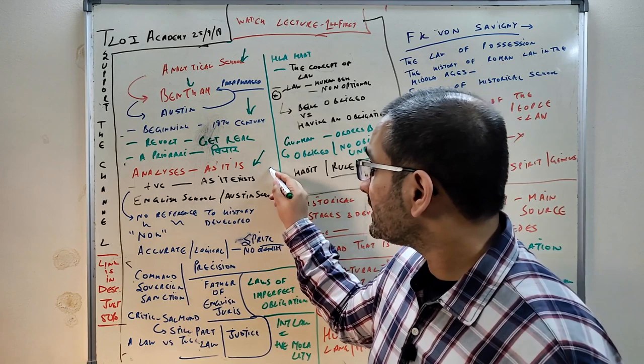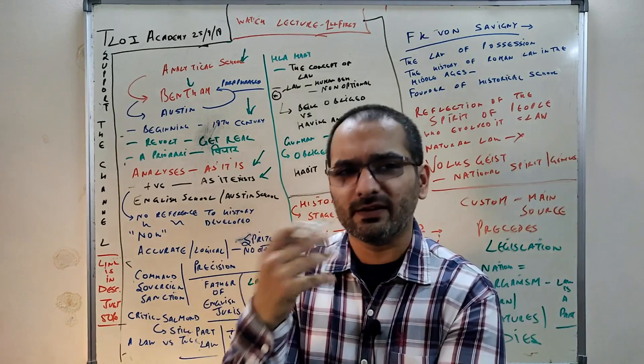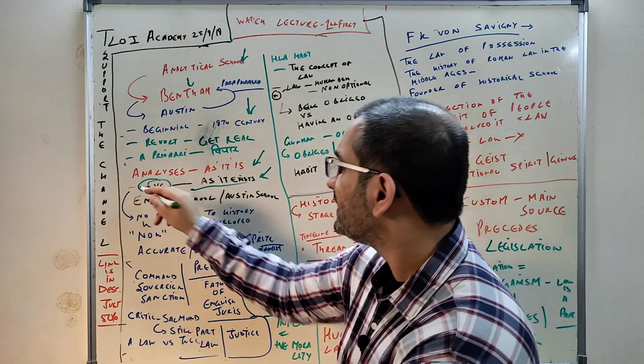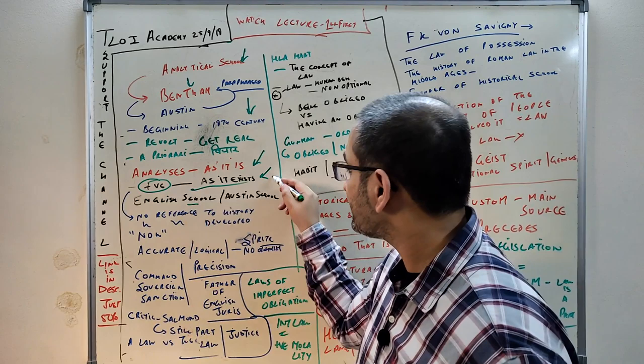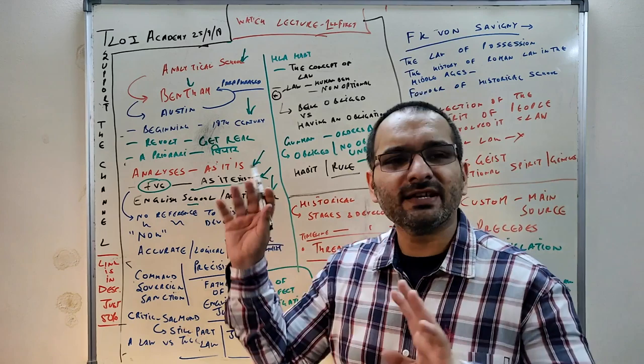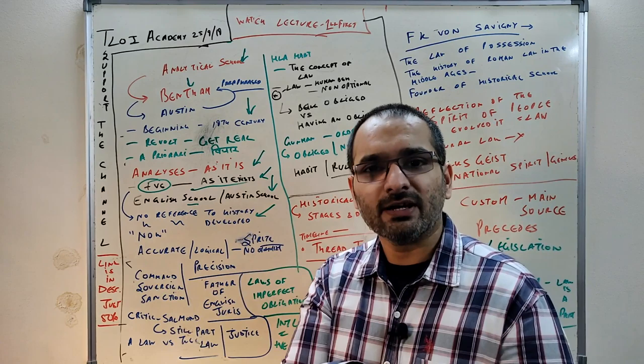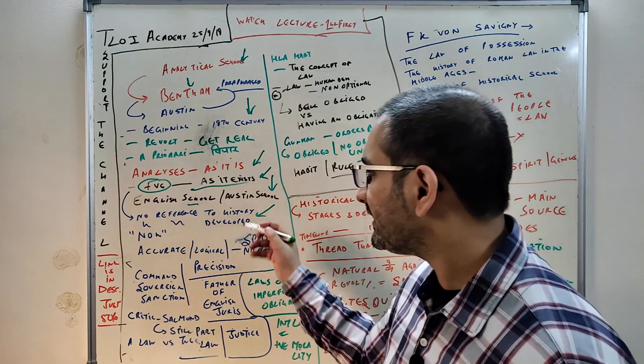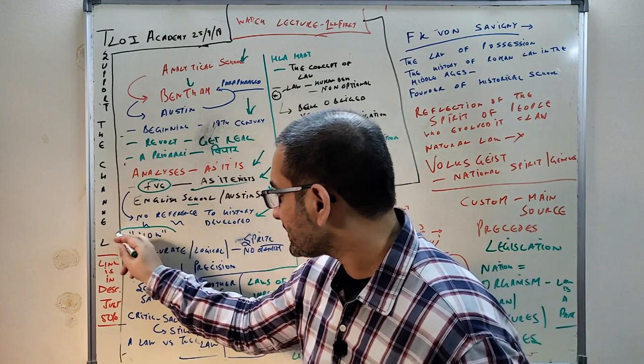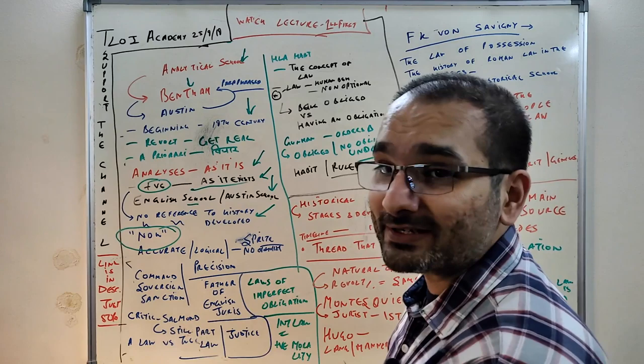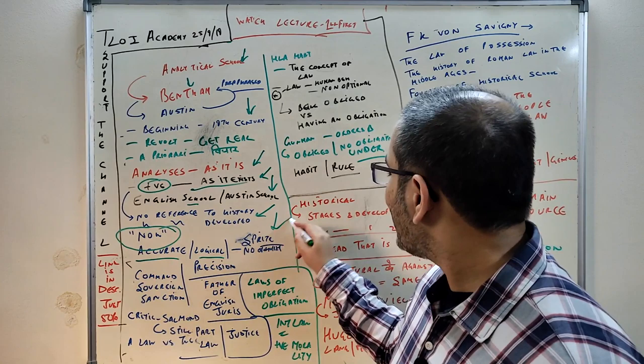It was basically a revolt against abstract discussions. They wanted to finish work quickly, as it is. This was known as positive law - meant as it exists right now. This was also known as the English school and the Austin school. They didn't care where law came from or where it's going. They focused on what exists now, with no references to history or development. They were living in the moment, very focused and precise.